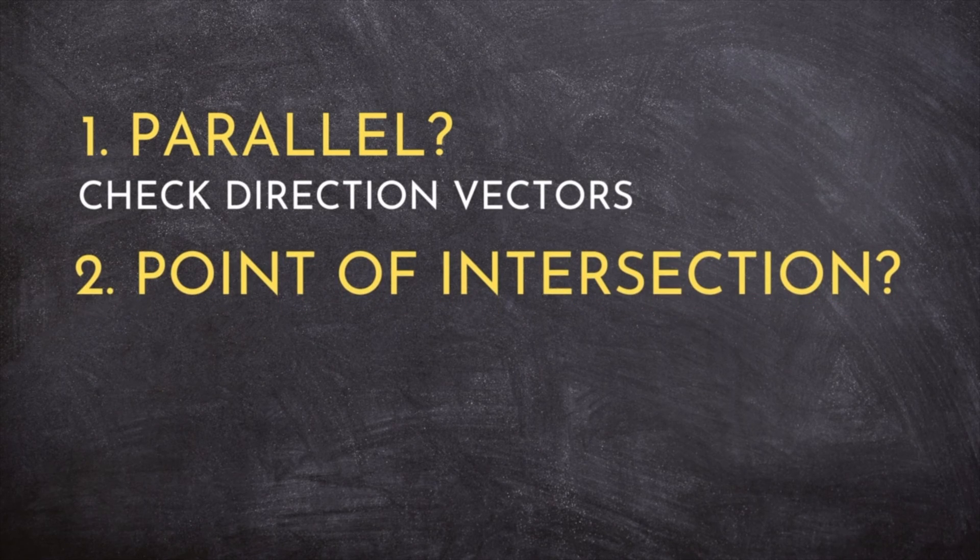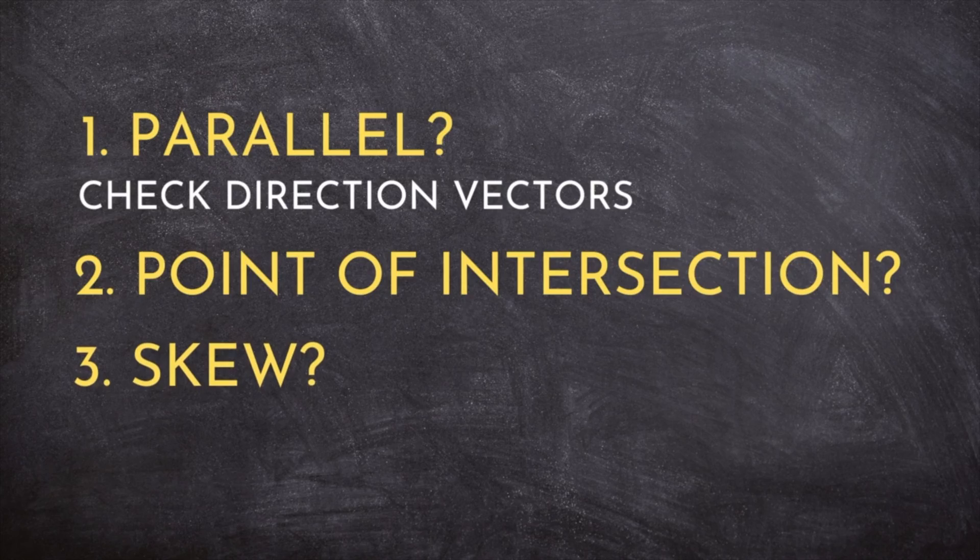If the lines aren't parallel, they could either have a single point of intersection or they could be skew. Spoiler alert: these lines are not skew, as I'm going to cover that topic in another video. So let's check for a point of intersection.